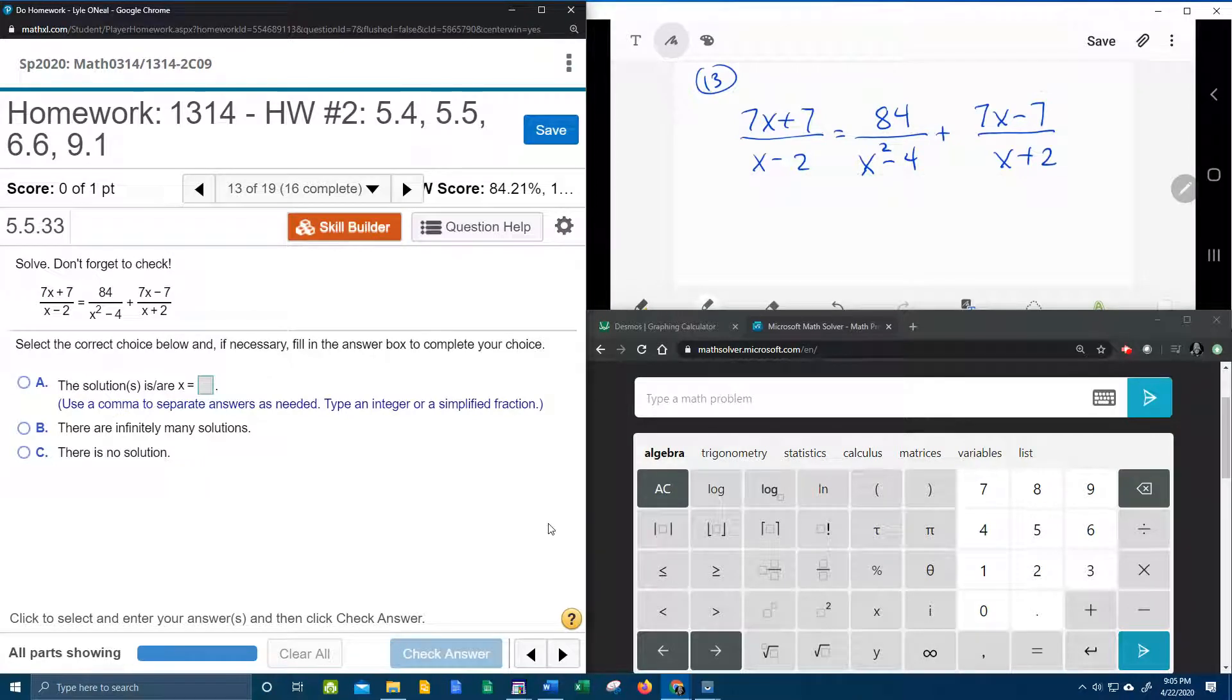Alright here we go, question number 13 from our College Algebra homework number 2 in My Lab Math. We have yet another rational equation that we're going to solve for x. So up here in the right, over here in the upper right hand corner, we've got our problem written down.